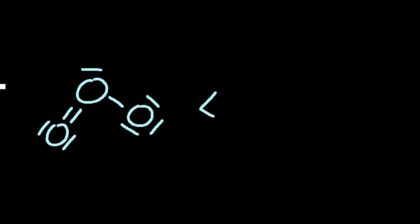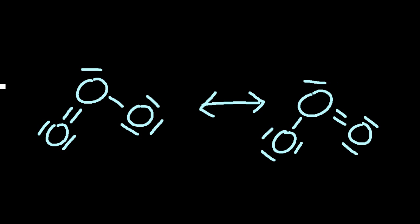Well ozone goes between two structures, the one on the left and the one on the right. Essentially the double bond is moving as well as a single bond. And those are called resonant structures.